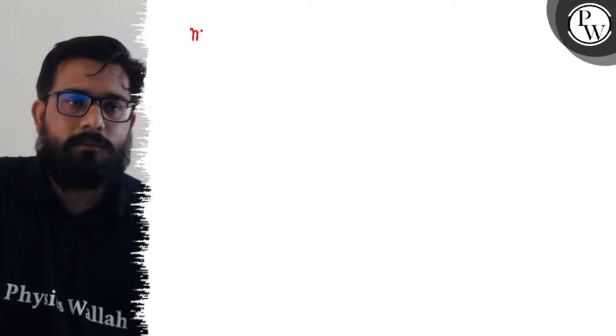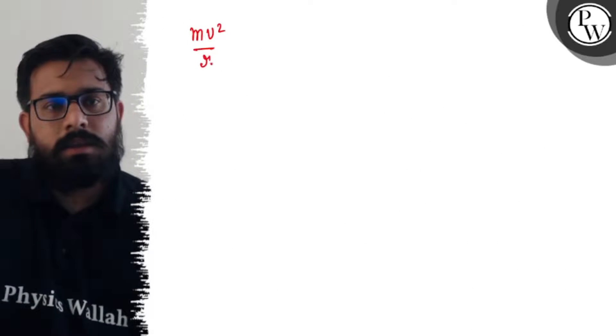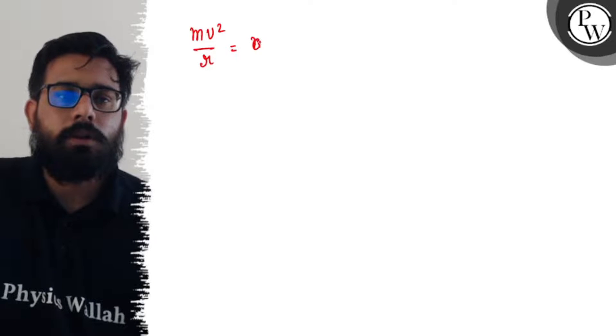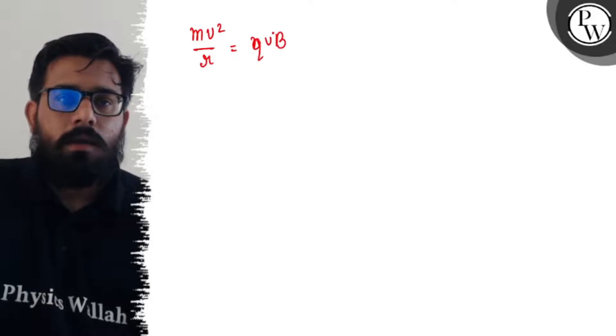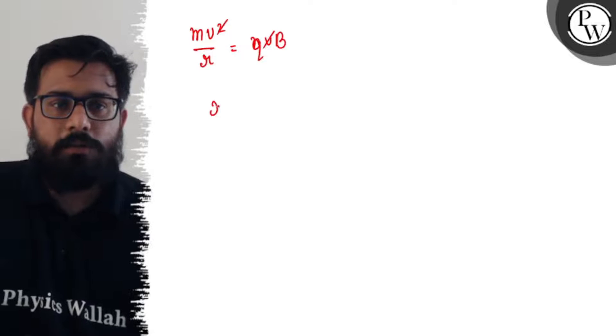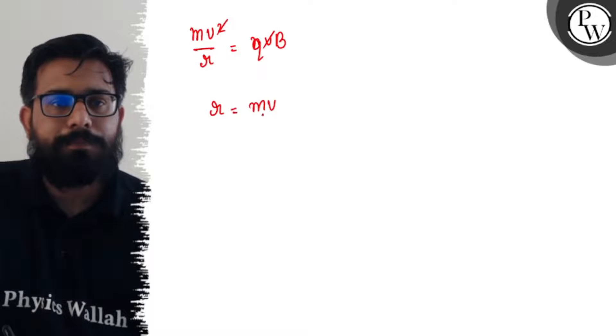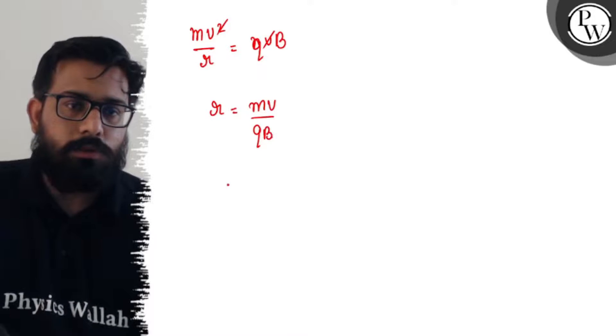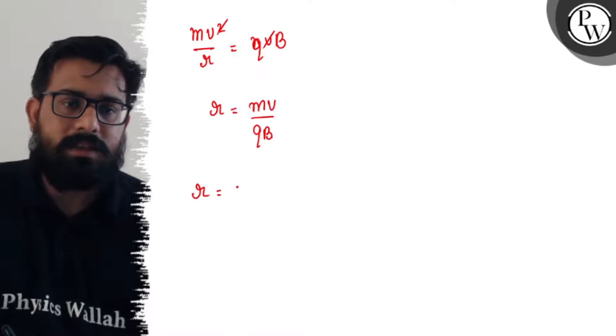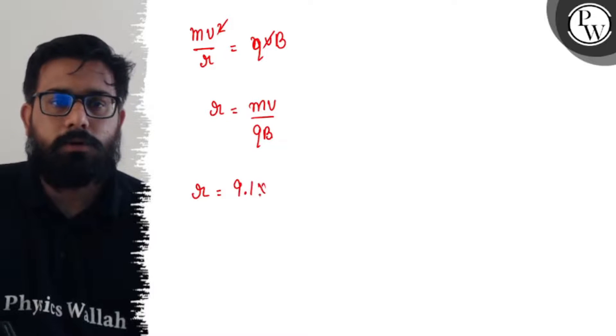Let's solve this on the next page. So centripetal force mv²/r will balance qvB. v cancels out, so the value of r can be written as mv/qB. Mass is 9.1 × 10^-31.